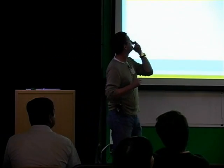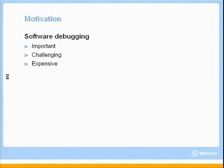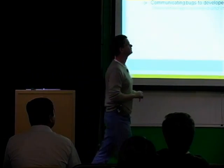The motivation here is that software debugging is important, challenging, and expensive. Clearly it's important — developers produce programs that have bugs in them. It happens. They're often really hard to find, and because they're hard to find, it's expensive. It takes a lot of time to find these problems. Let me highlight what I think are some particularly challenging aspects of software debugging.